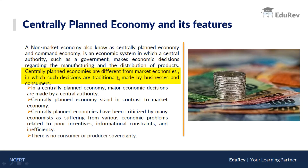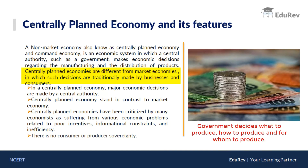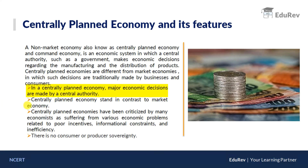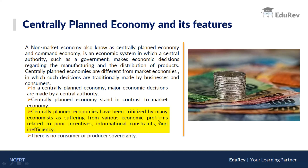Centrally planned economies are different from market economies, where such decisions are traditionally made by businesses and consumers. In a market economy all decisions are taken by producers, but in a centrally planned economy the central planner decides what goods and services to produce, by whom, and how. Major economic decisions are made by a central authority. Centrally planned economies have been criticized by many economists as suffering from various economic problems related to poor incentives, informational constraints, and inefficiencies.